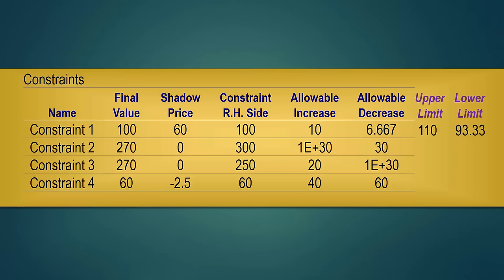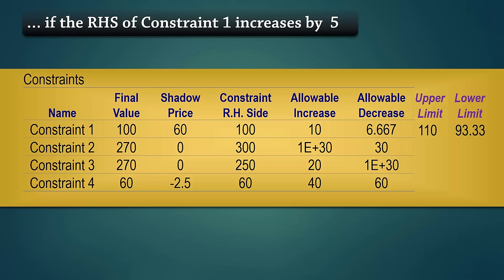So what will happen to optimal profit if the right hand side of Constraint 1 increases by 5? Notice here that the allowable increase for Constraint 1 is 10. So an increase of 5 is allowable. Therefore, the optimal profit will change by 5, the amount of change, times 60, the shadow price, to give 300. Since this is positive, profit will increase by 300 from 5850 to become 6150.